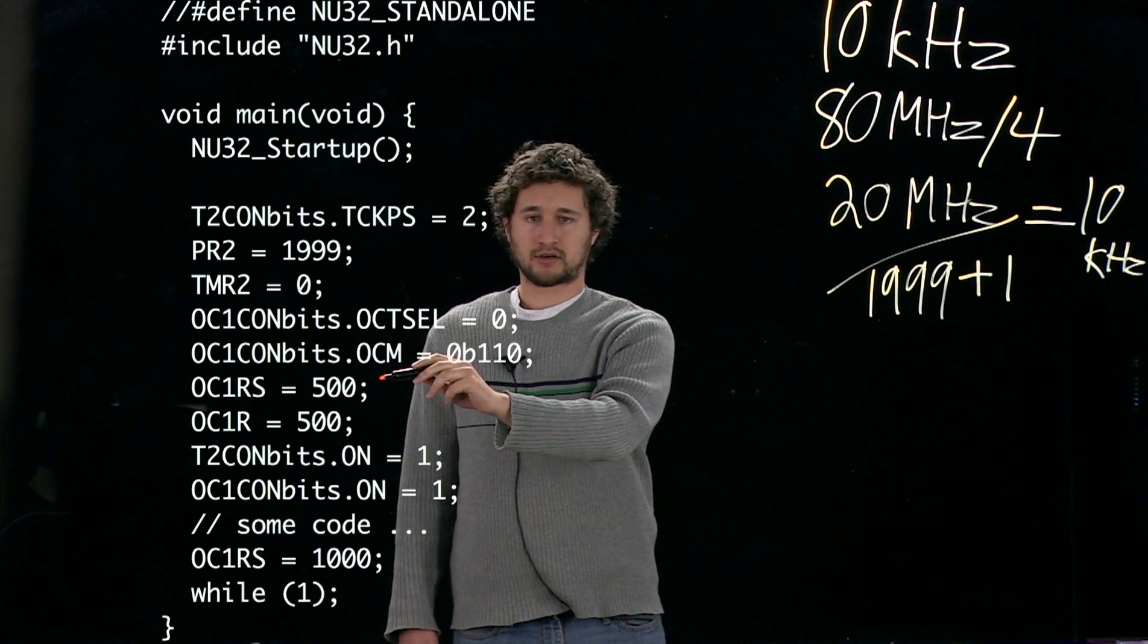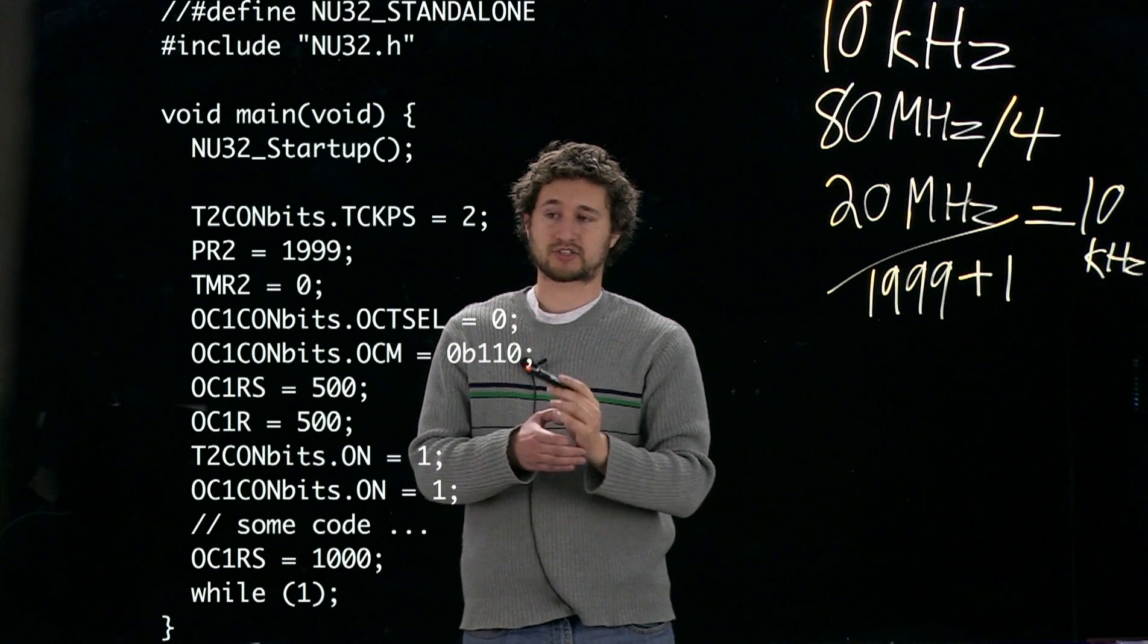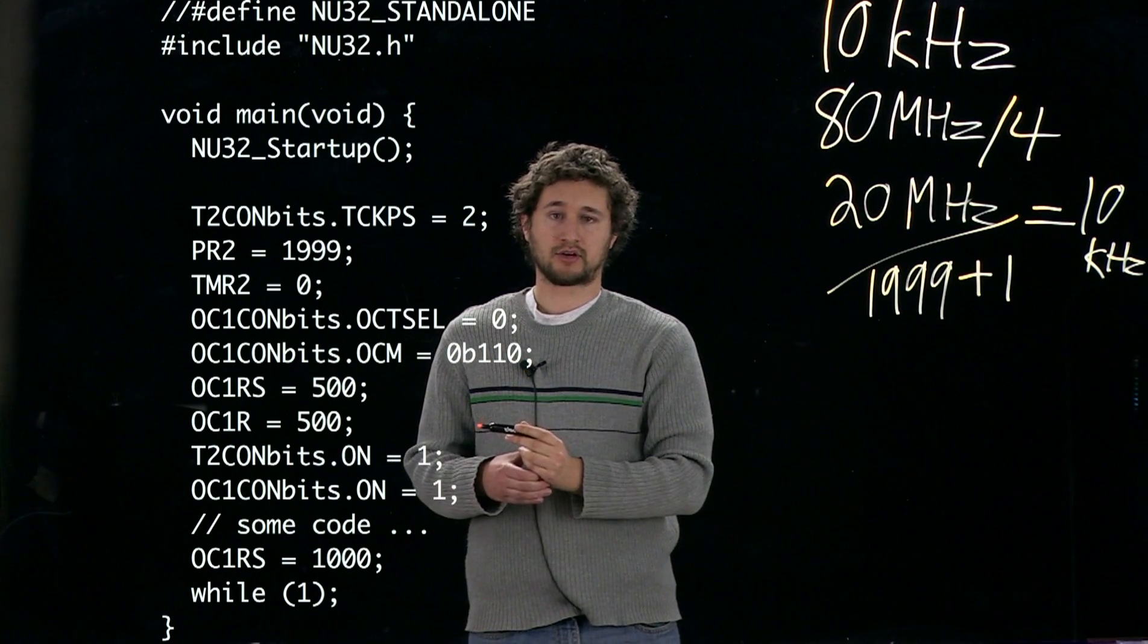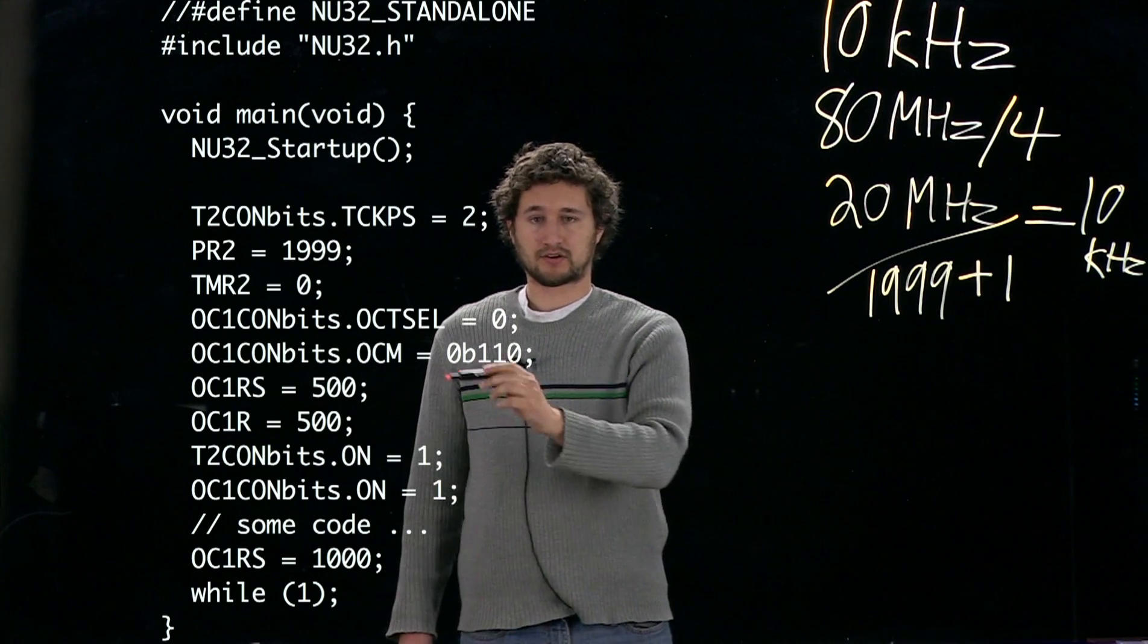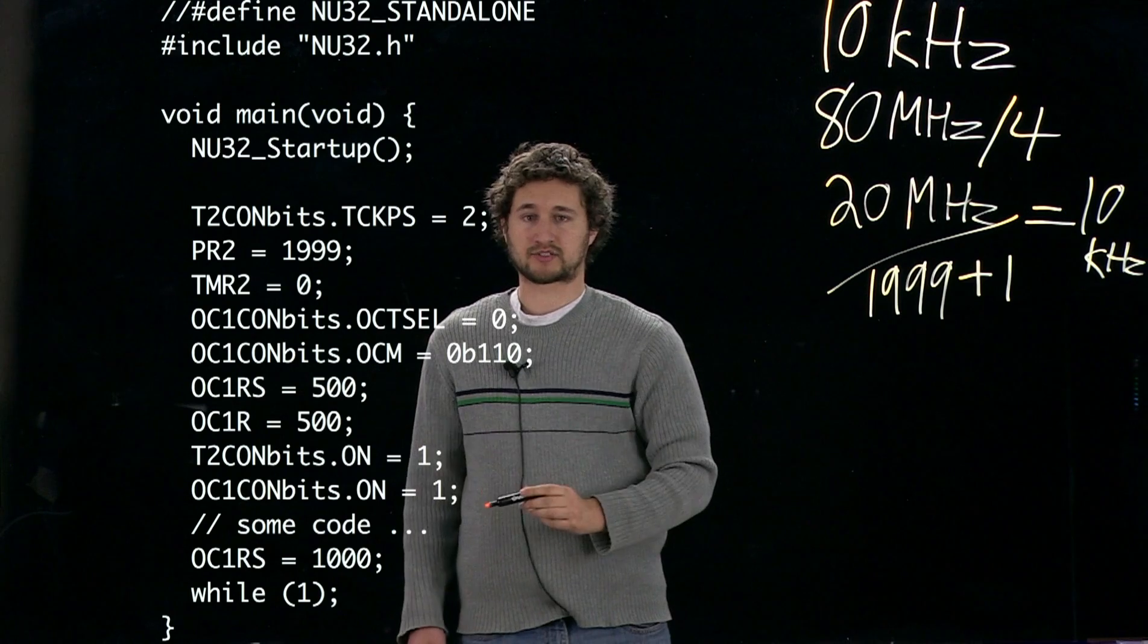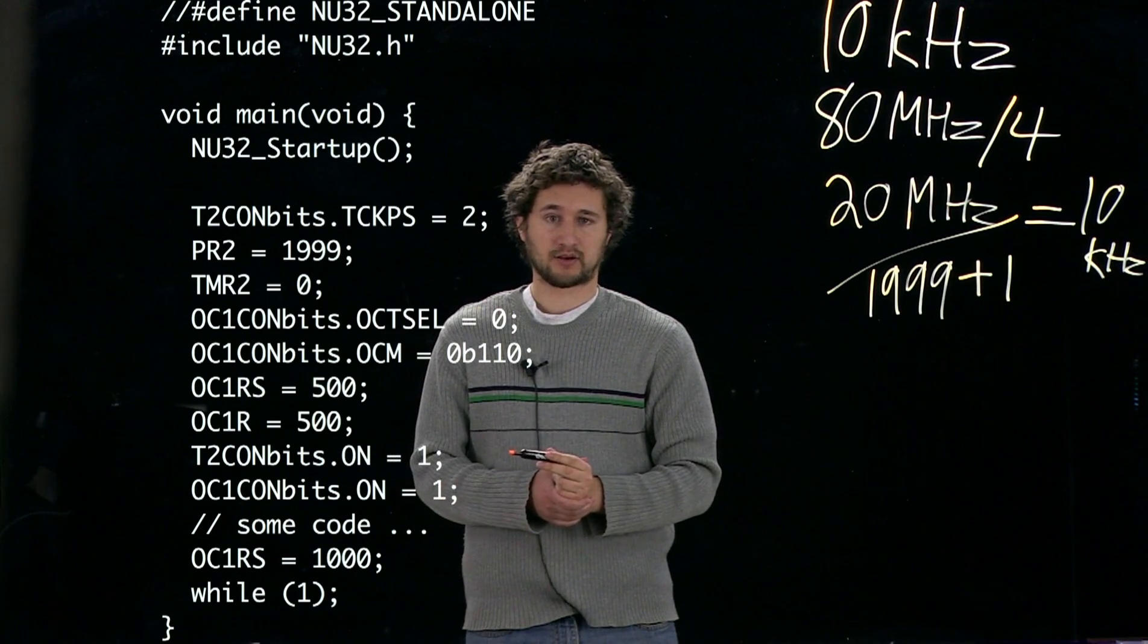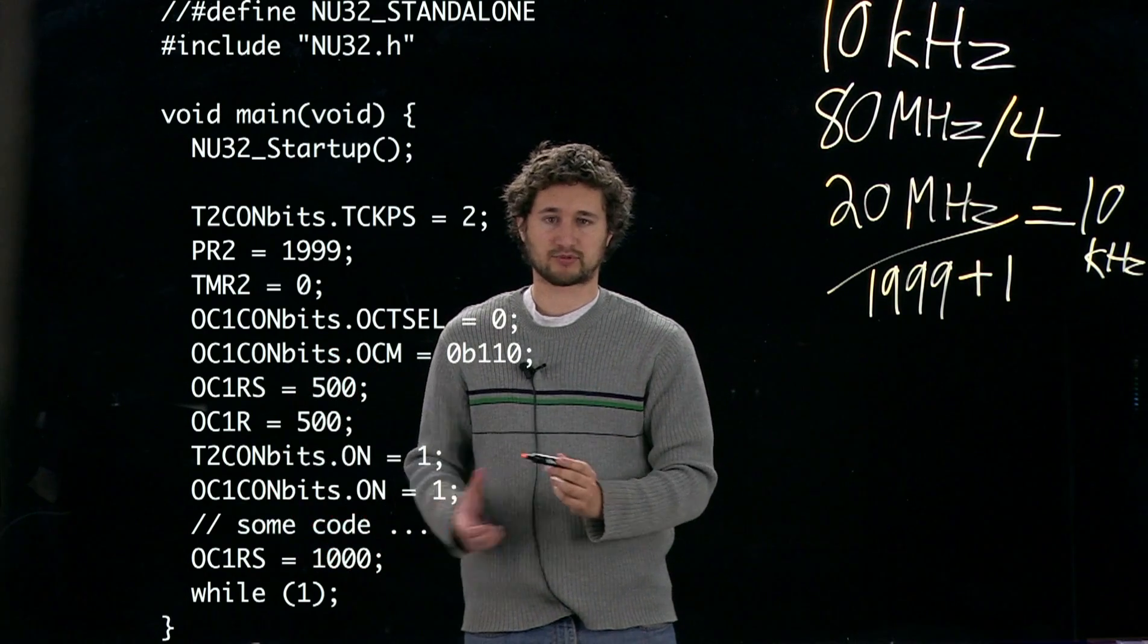Here we set OC1RS to 500. This is saying that on the next clock cycle, set the duty cycle to be 25%. Finally, when we set OC1R to 500, that's setting the initial duty cycle to 25% because 500 divided by 2000 is 25%.